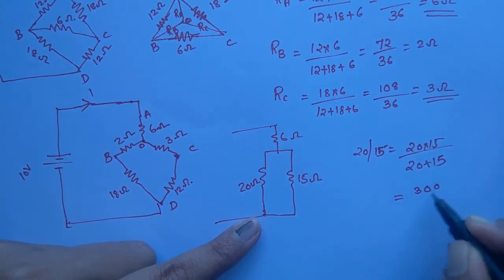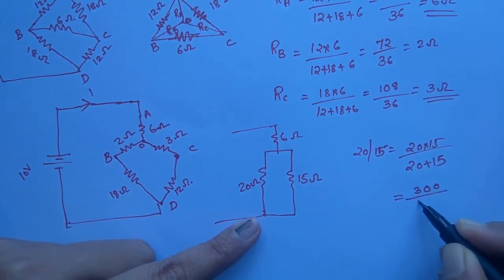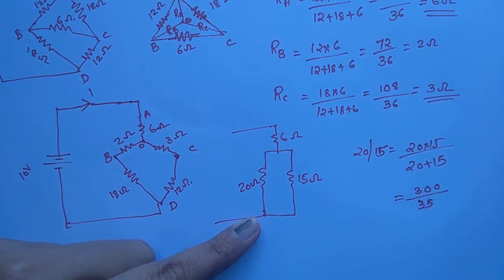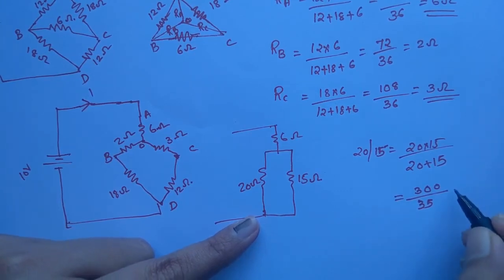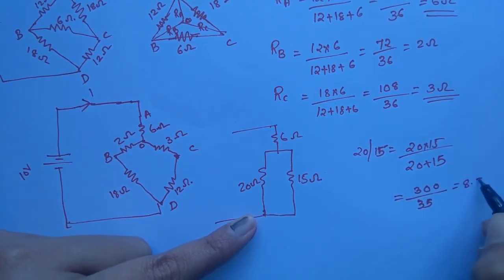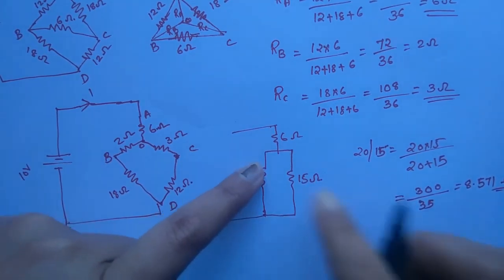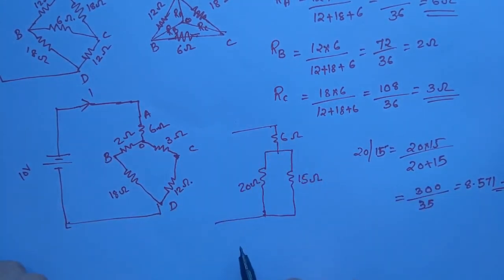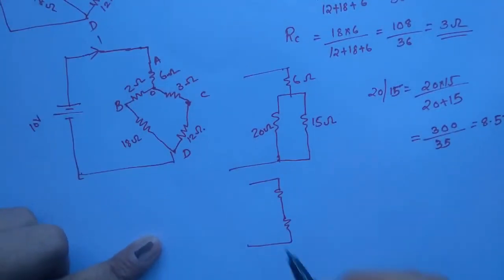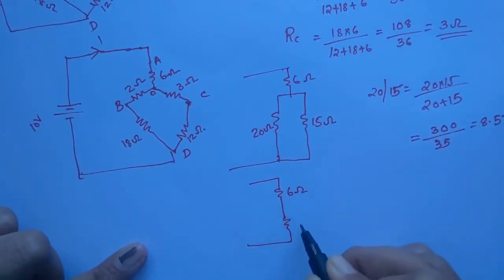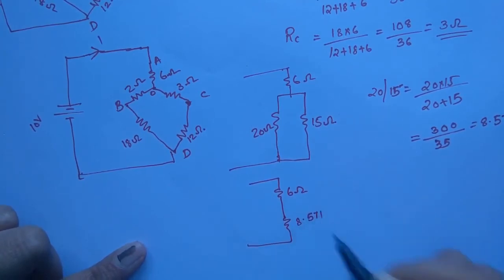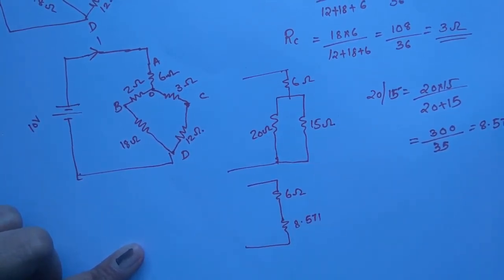20 and 15 parallel: 20 multiplied by 15 divided by 20 plus 35 — that is 300 divided by 35 — equals 8.571 ohm. That 8.571 ohm is in series with 6 ohm, giving two resistances: 6 ohm and 8.571 ohm.